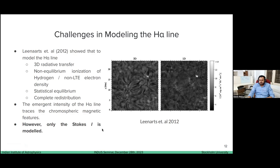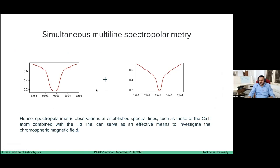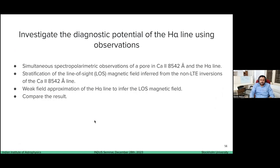The idea is to use the H-alpha line along with existing lines such as calcium 8542 to investigate the chromospheric magnetic field. To investigate the diagnostic potential of H-alpha using observations, we had access to simultaneous observations of a pore in the calcium 2 line and H-alpha line. What we did was infer the stratification of magnetic field using calcium 8542 and H-alpha, then infer the magnetic field from H-alpha using weak field approximation, and then compare the stratification. That is our main approach.